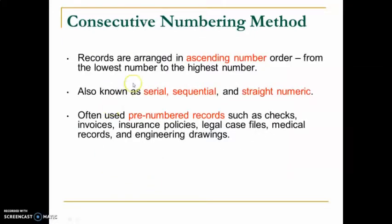The first one is the consecutive numbering method. It is a filing method in which you arrange records according to ascending number order — meaning from the lowest numbers to the highest numbers, for example 1, 2, 3, 4, 5, 6, 7, and so on.